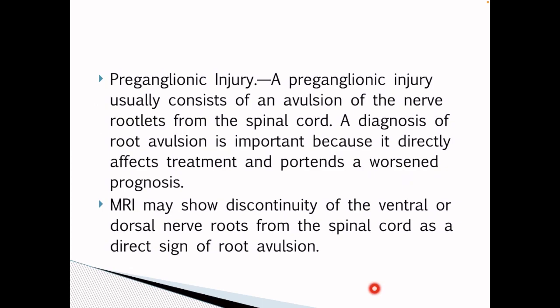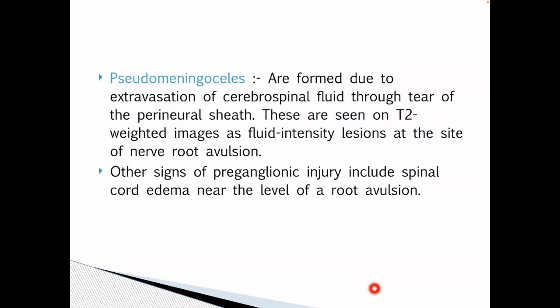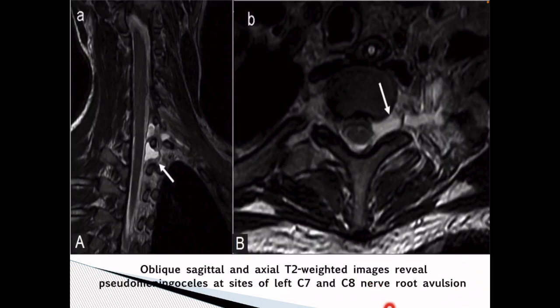MRI may show discontinuity of the ventral or dorsal nerve root from the spinal cord as a direct sign of root avulsion. Pseudomeningoceles are formed due to extravasation of CSF fluid through tears of the perineural sheath. They are seen on T2-weighted images as fluid signal intensity lesions at the site of nerve root avulsion. Other sites of preganglionic injury include spinal cord edema near the level of the root avulsion. These oblique sagittal and axial T2-weighted images reveal pseudomeningoceles at the site of left C7 and C8 nerve root avulsion.